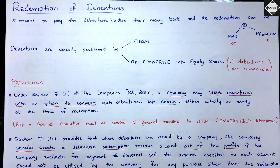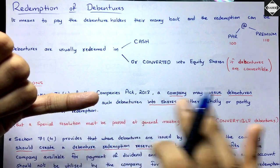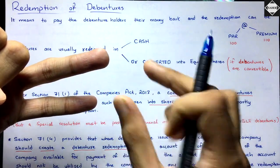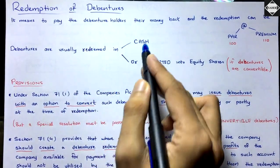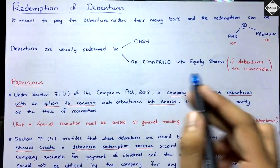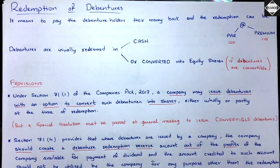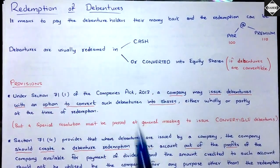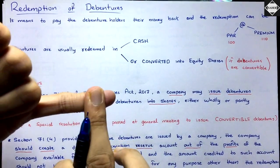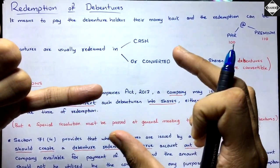Redemption of debentures means paying the debenture holders their money back — either at par (face value) or at a premium (more than face value). Whatever extra is paid is a loss to the company. Debentures are usually redeemed in cash, or they can be converted into equity shares if they are convertible. We also looked at the role of the Companies Act 2013 in redemption of debentures, specifically Section 71, Sub-section 1.